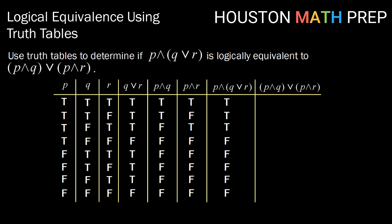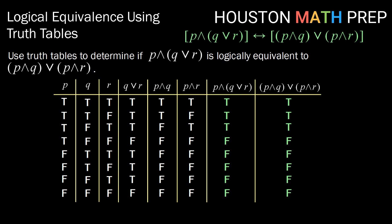Finally, for (P and Q) or (P and R), the disjunction is true unless both are false: true, true, true, false, false, false, false, false. Comparing the two final columns, both have true, true, true and then false for the rest. So these two statements are logically equivalent.